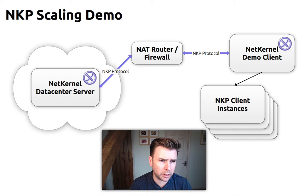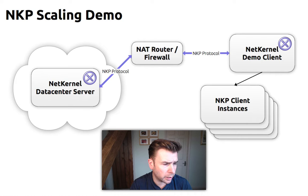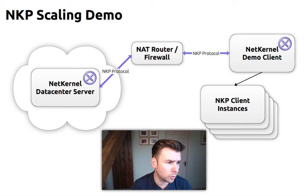This is a quick demonstration of NKP showing how we can scale the resource-oriented abstraction between multiple machines. This is an example of a highly scaled connection to a data center server running NetKernel with a number of clients which are going to be simulated running behind a firewall and a NAT.